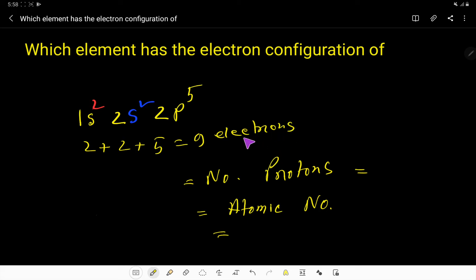the number of electrons equals the number of protons. So here the number of protons is 9. We know that the number of protons is called the atomic number, so the atomic number is 9.